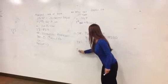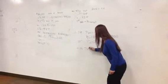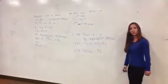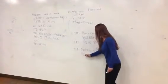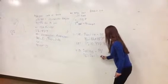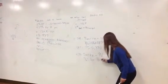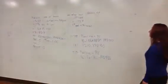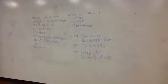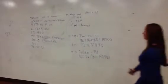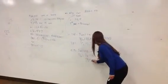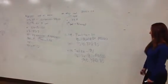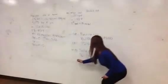And to find the total interest paid, we take payment times N minus PV. So, the payment of $1,062.06 times 180 minus the loan amount of $140,800. You should get $50,370.80 for your total interest paid.